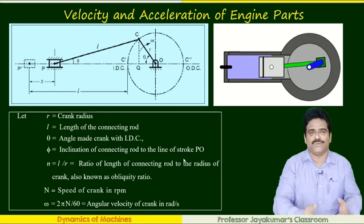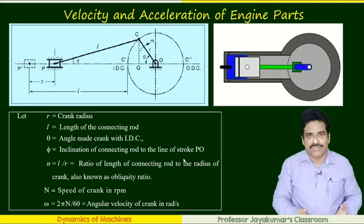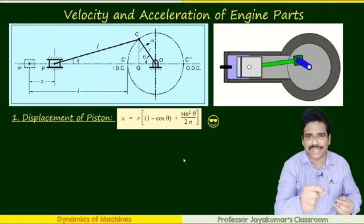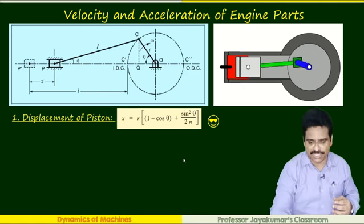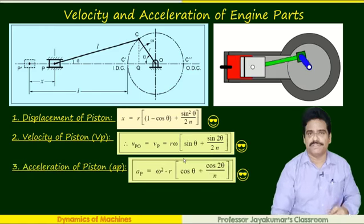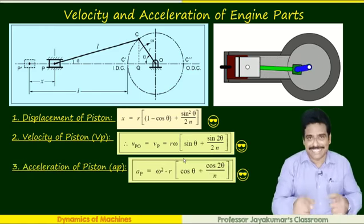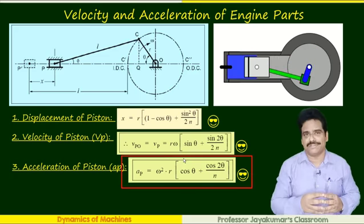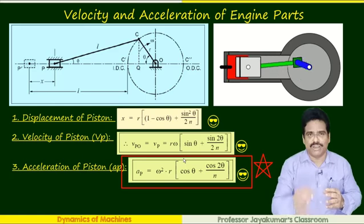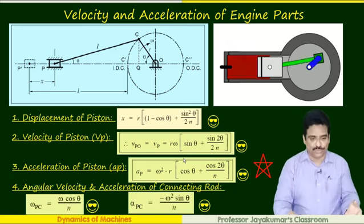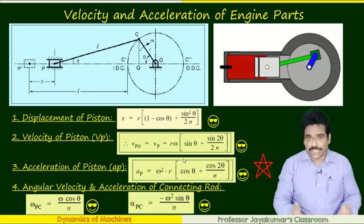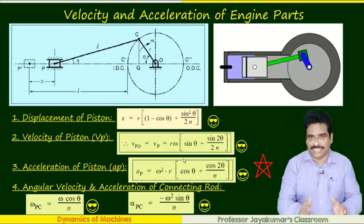These are the notations we are going to use in this video. With all these notations, we can summarize the kinematic characteristics of IC engines: the displacement of piston formula, the velocity of piston formula, and most importantly the acceleration of the piston, which we use to find inertia force. Angular velocity and angular oscillation of the connecting rod are not required now, since we have neglected its effect in this case.